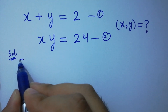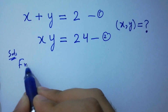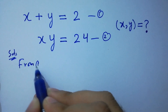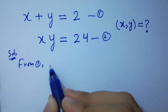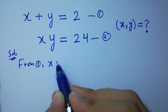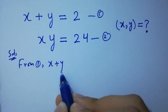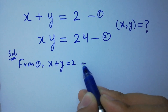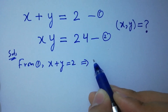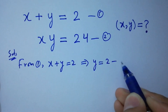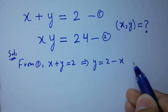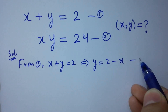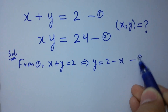From the first equation, x plus y equals 2, therefore y equals 2 minus x. Let's call this the third equation.